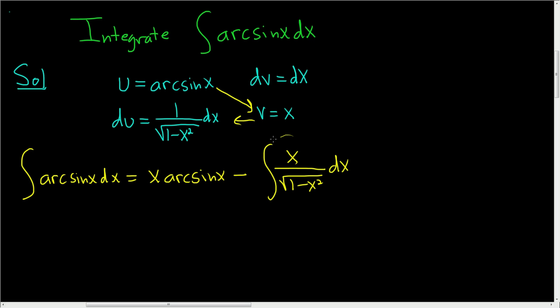Now we have to deal with this integral. To do this, we'll make a u substitution. We'll set u equal to 1 minus x squared. So then du becomes negative 2x dx. We don't have a negative sign or a 2 in the integral, so we'll divide by negative 2. So negative 1 half du equals x dx.